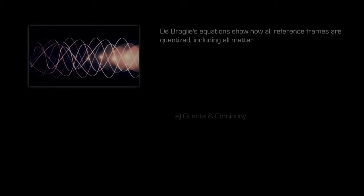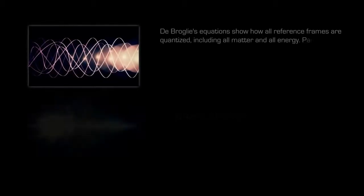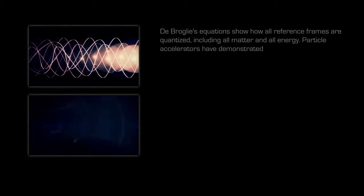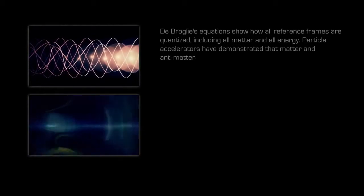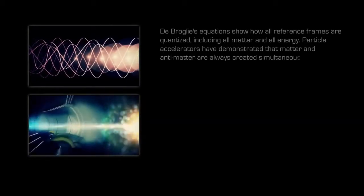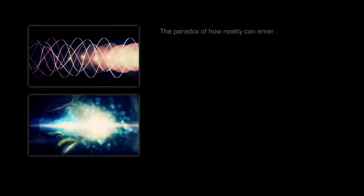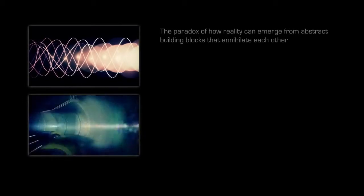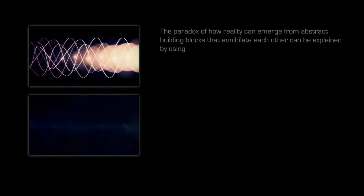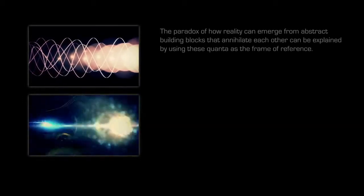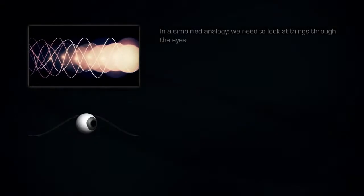De Broglie's equations show how all reference frames are quantized, including all matter and all energy. Particle accelerators have demonstrated that matter and antimatter are always created simultaneously. The paradox of how reality can emerge from abstract building blocks that annihilate each other can be explained by using these quanta as the frame of reference. In a simplified analogy, we need to look at things through the eyes of a photon.